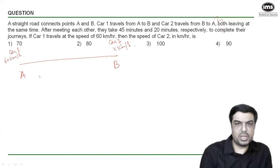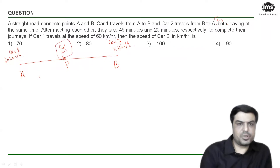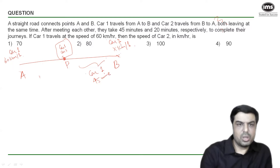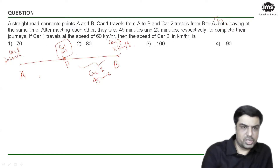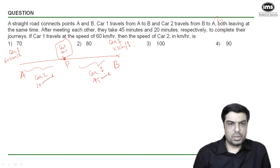They meet somewhere at point P. After meeting, car one continues its journey and reaches B in 45 minutes, while car two reaches its destination A in 20 minutes. We have to find the value of x.